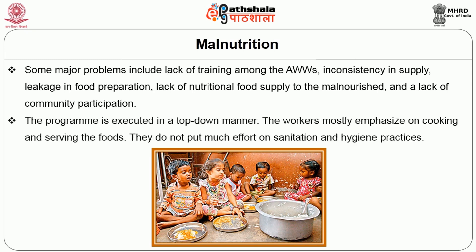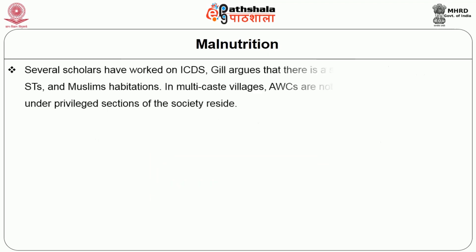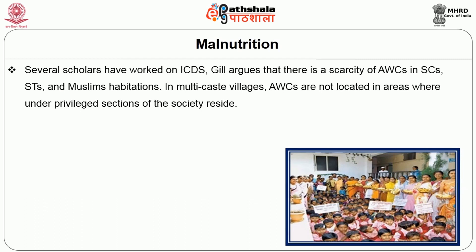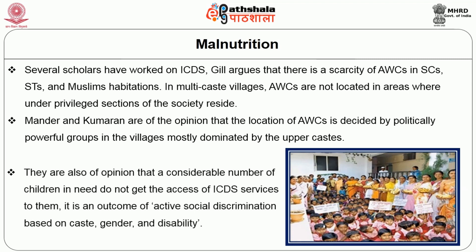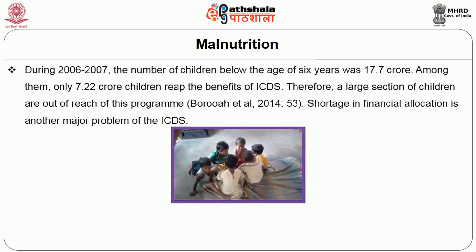The program is executed in a top-down manner and workers mostly emphasize cooking and serving food, with little effort on sanitation and hygiene practices. Gil argues that there is a scarcity of Anganwadi centers in SC, ST, and Muslim habitations. In multi-caste villages, Anganwadi centers are not located in areas where underprivileged sections reside. Mandar and Kumaran opine that location is decided by politically powerful, mostly upper-caste groups, and that a considerable number of children in need do not access ICDS services — an outcome of active social discrimination based on caste, gender, and disability. During 2006-07, of 17.7 crore children below 6 years, only 7.22 crore benefited from ICDS. Shortage in financial allocation is another major problem; the 11th Five-Year Plan allocated Rs. 8,480 crore per annum. Divakar argues that financial shortfall is an important cause of poor food quality. Kent argues that people should be aware of their rights to judge whether they are getting what they are supposed to get.